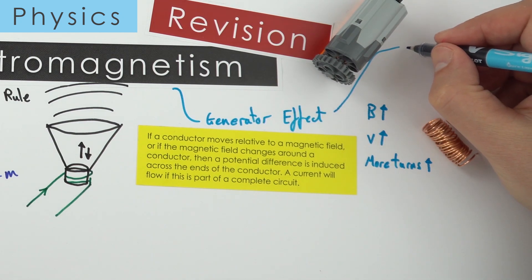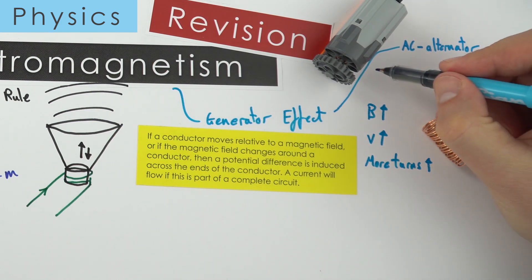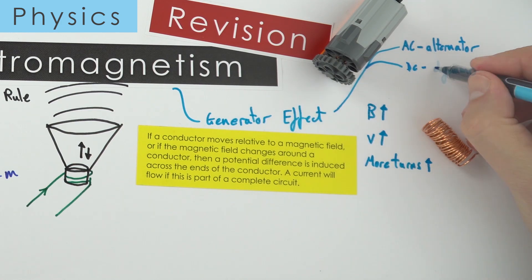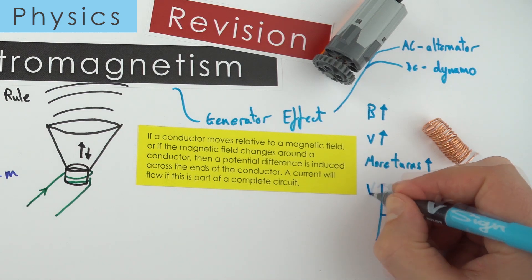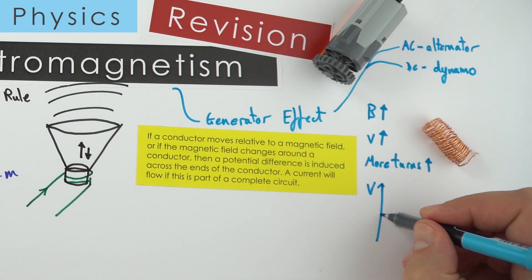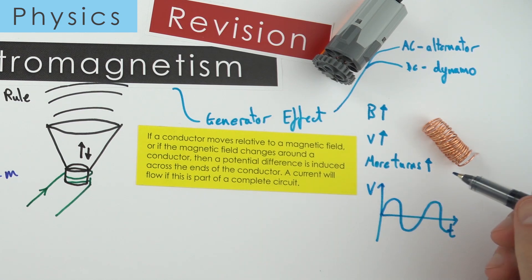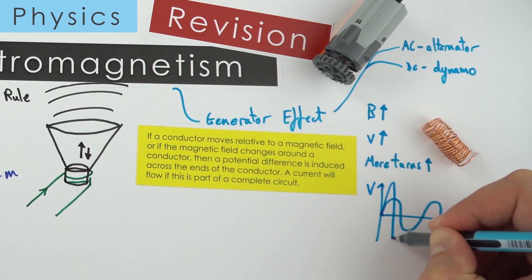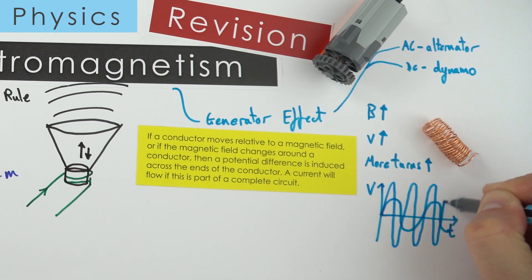Generators are really two sorts. We have AC — alternating current — generators called alternators. You can also have ones which give a DC supply, called a dynamo. Looking at output voltage with time, for an alternator you get a sinusoidal wave. If you spin it quicker or have a bigger magnetic field, you get a higher voltage, and if it's spinning quicker you get more cycles per second.